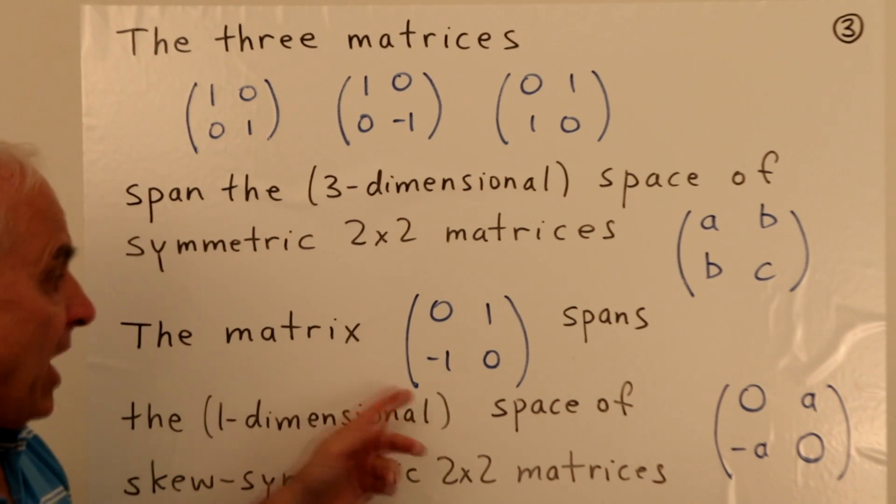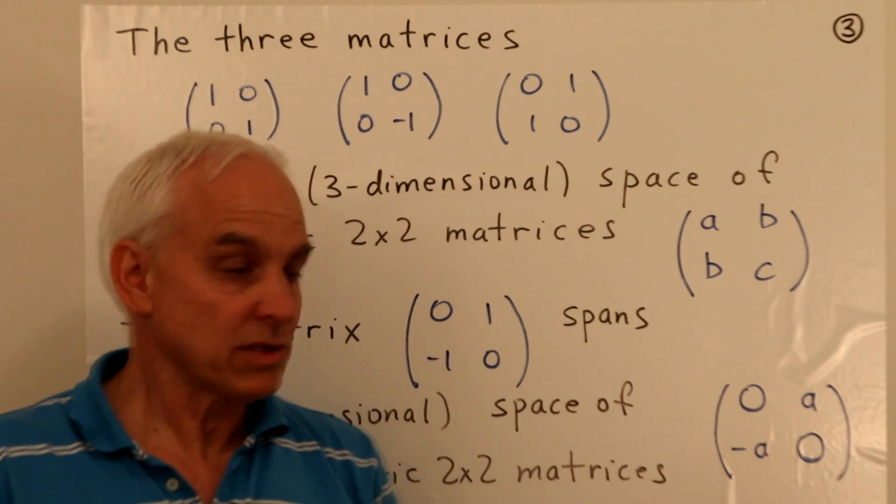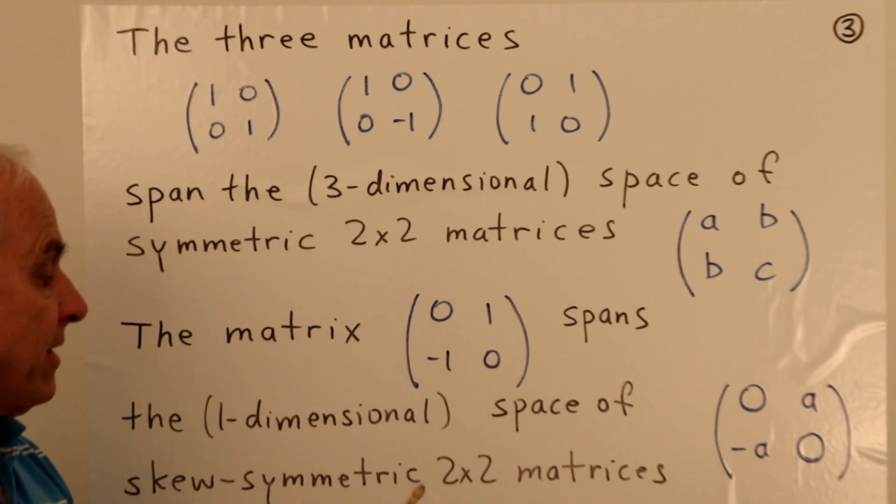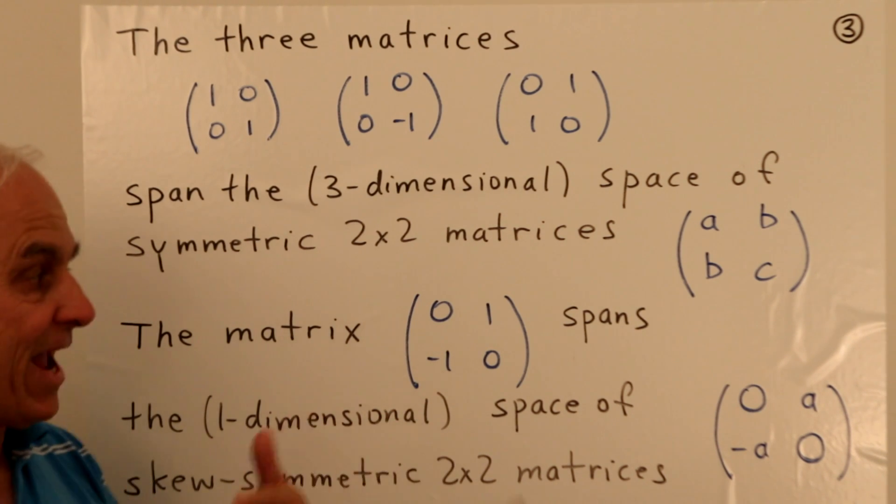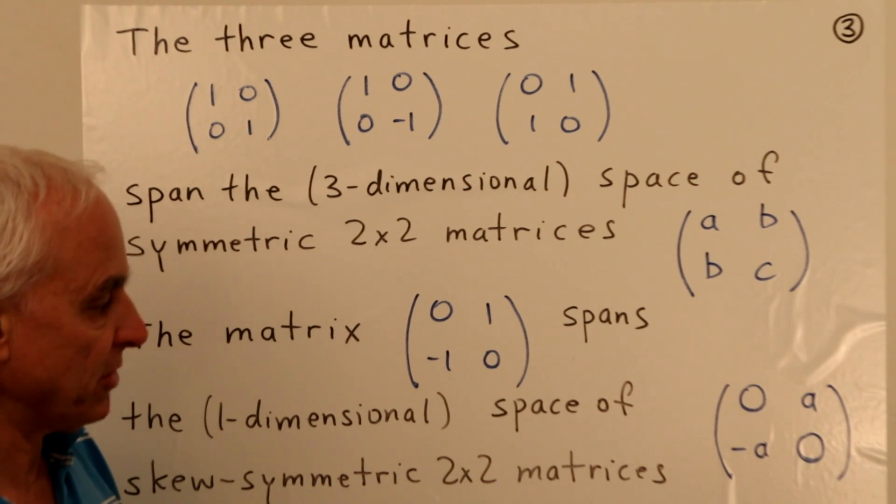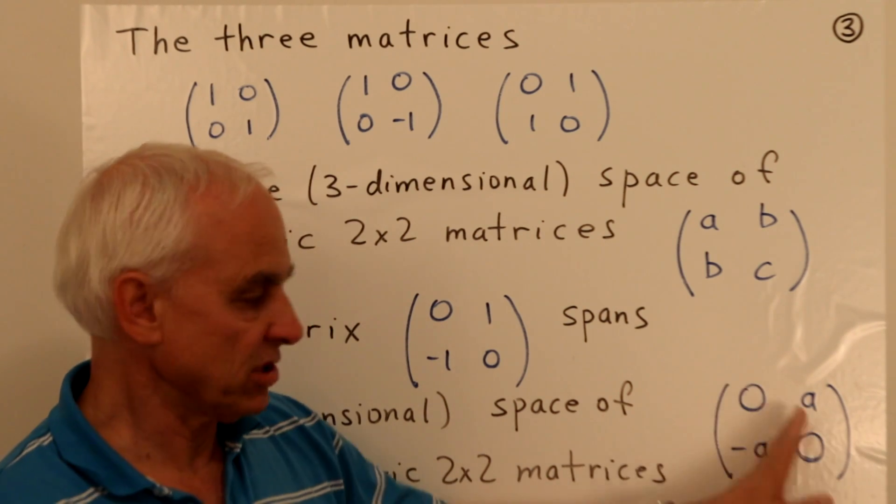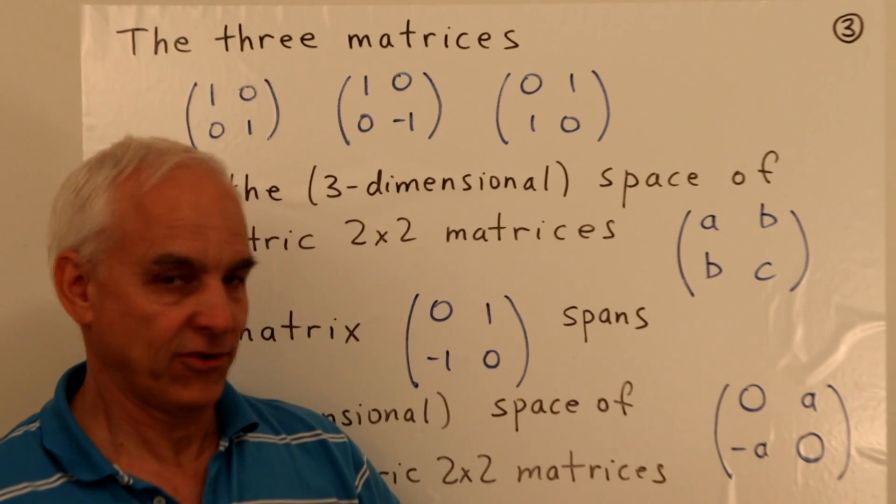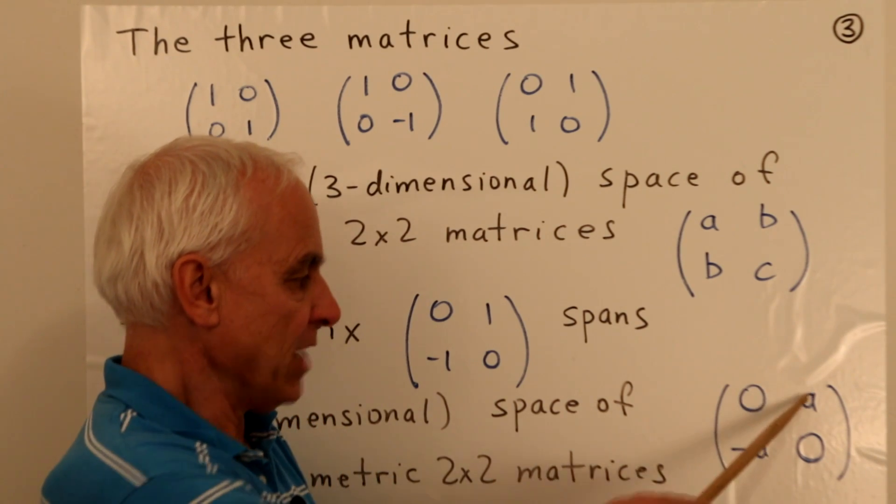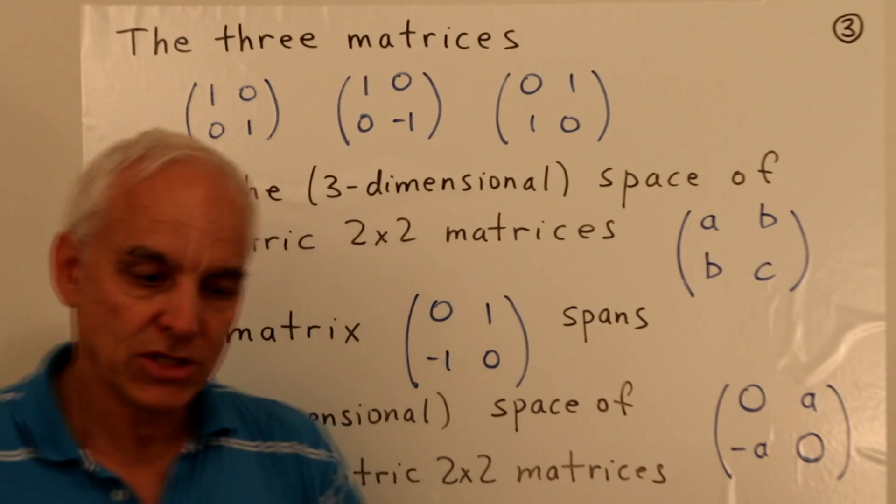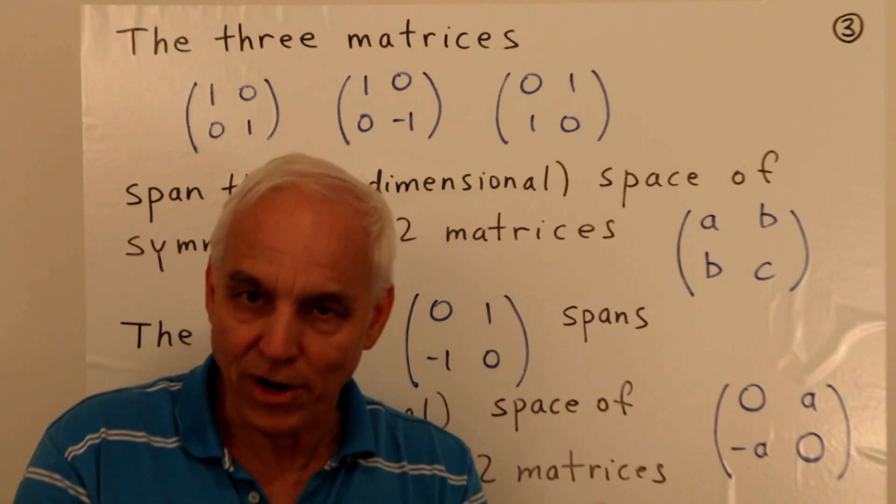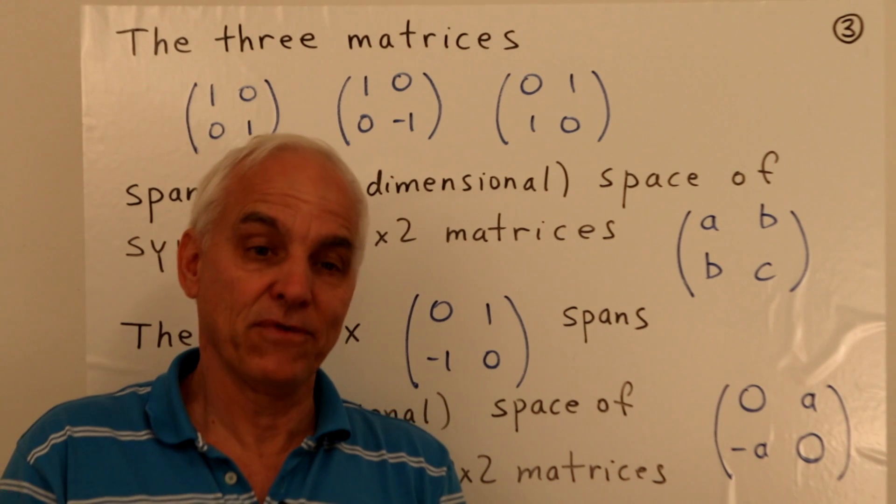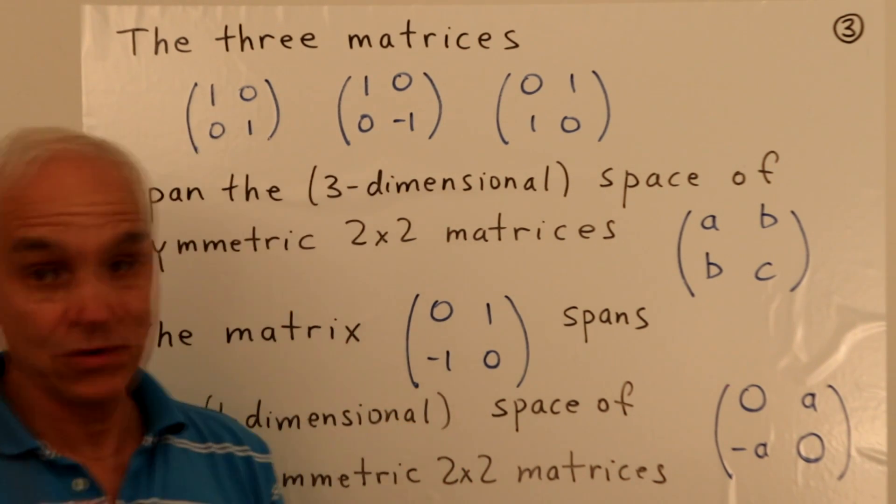On the other hand, the matrix for the cross product, [0,1; -1,0], is a skew-symmetric matrix. It has the property that when you take its transpose, you get negative of itself. The space of skew-symmetric 2×2 matrices is just multiples of this one, just this one-dimensional space consisting of matrices with zero on the diagonal and entries that are negatives of each other. So the separation between our dot products and our cross product is reflected in the difference between symmetric matrices and skew-symmetric matrices.